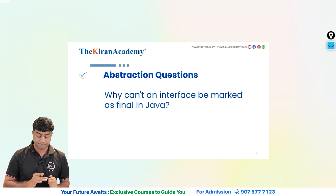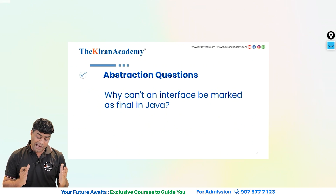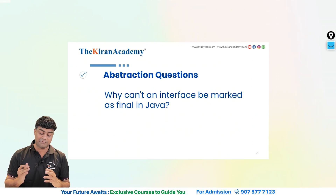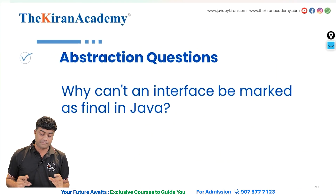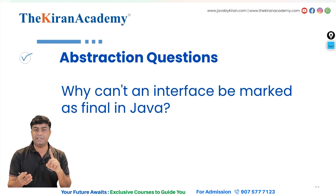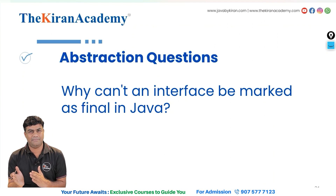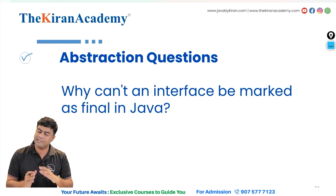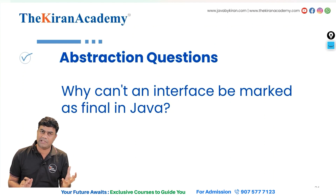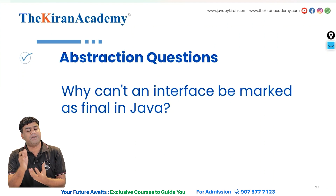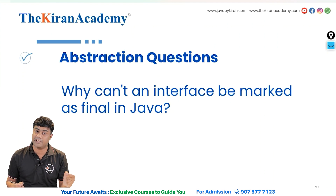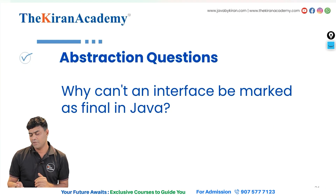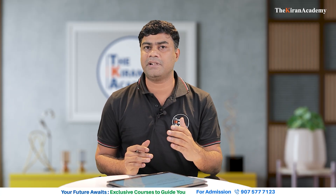Why can't an interface be marked as final in Java? The final keyword can be applied to classes, variables, and methods. Interfaces are not extended — they are implemented, which is a different story. Since interfaces need to be implemented into a class, the final keyword cannot be applied to an interface.